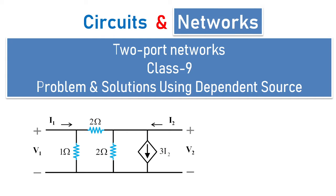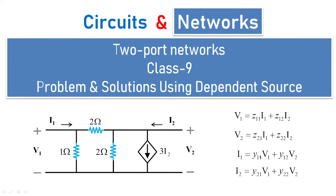Hi, welcome to another session of circuits and networks. In today's class 9 under two-port networks, we are going to see problems and solutions using dependent sources. We know how to find Z parameters with the equations of V1 and V2, as well as Y parameters with the equations of I1 and I2. This particular class 9 we are going to treat as dependent source problem 1, and in the coming classes we are going to see more numericals involving dependent sources.